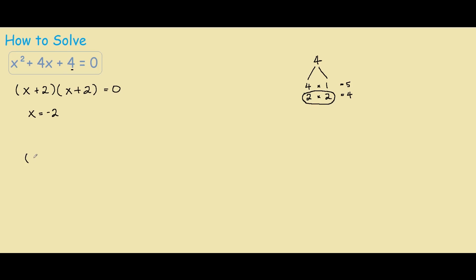So we have negative 2 squared plus 4 times negative 2 plus 4. And if this is true, it's supposed to equal 0.